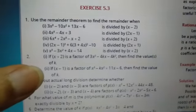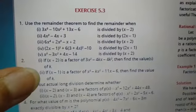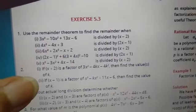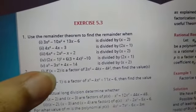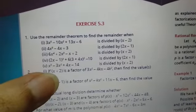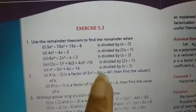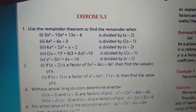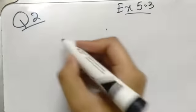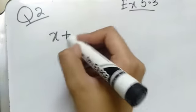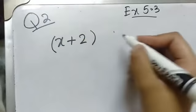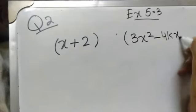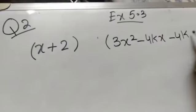Now we are going to solve question number 2. If x plus 2 is a factor of 3x squared minus 4kx minus 4k squared, then we have to find the values of k. So x plus 2 is the divisor. We have to take it equal to 0 and put the value of x in this polynomial. Our polynomial is 3x squared minus 4kx minus 4k squared.